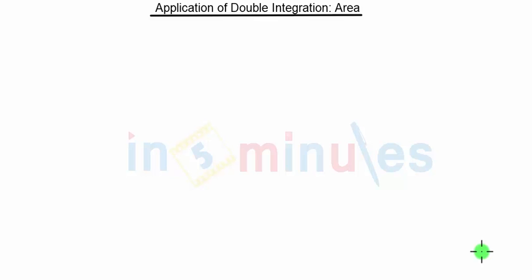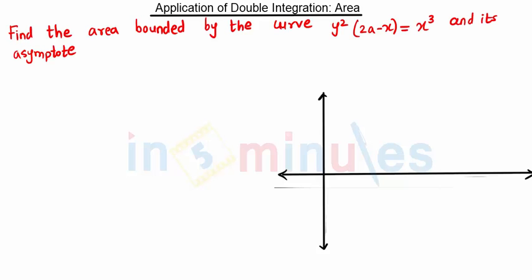Hello everyone, welcome to 'In 5 Minutes.' In this video we are going to see the next problem on application of double integration — that is, to find an area. The question is: find the area bounded by the curve y² (2a − x) = x³ and its asymptote.